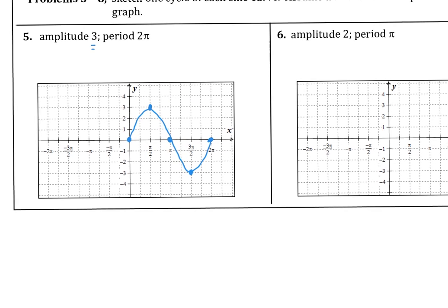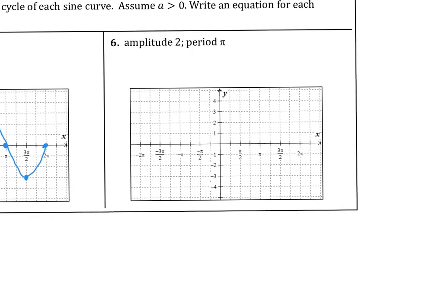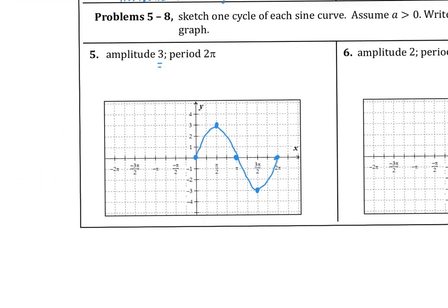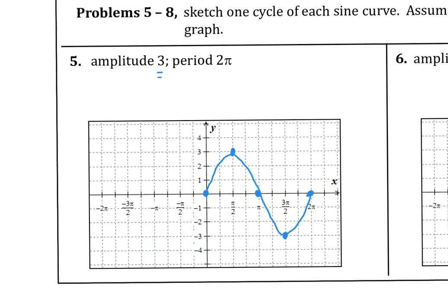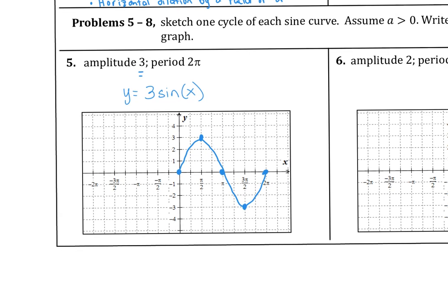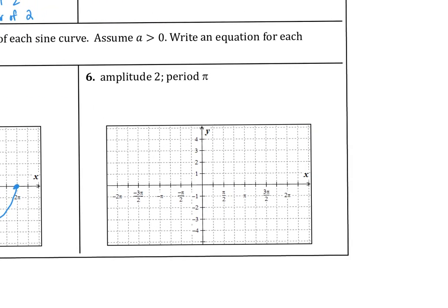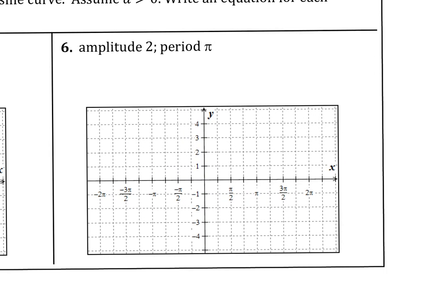We also need to write the equation. This would simply be 3 times the sine of x — remember, if the period is 2π, which is the traditional period for the sine curve, it's just sine of x. But for number 6, the period is now π, meaning it takes only from 0 to π to complete one cycle. The amplitude is 2.